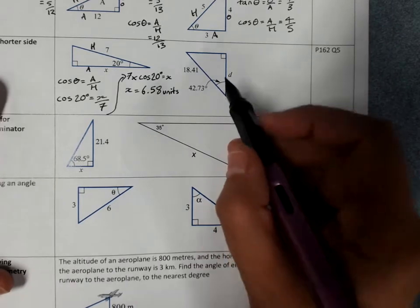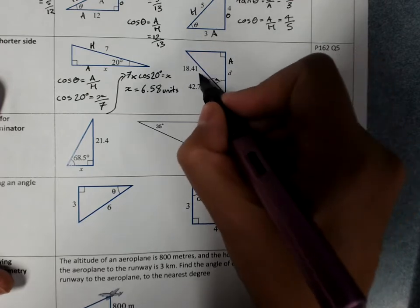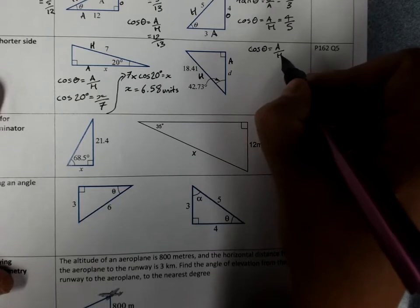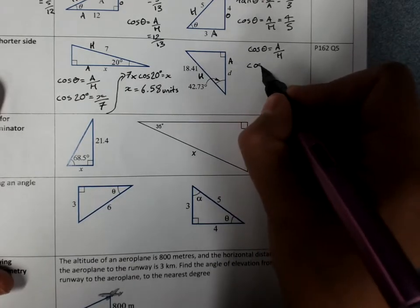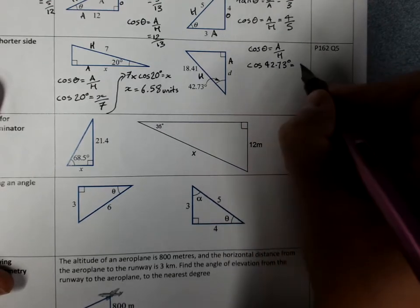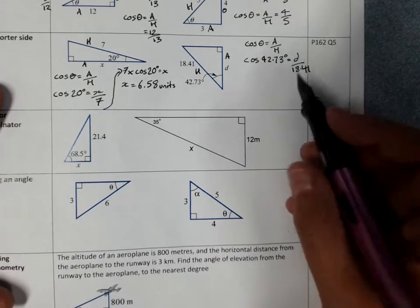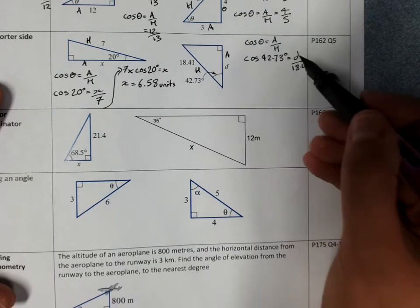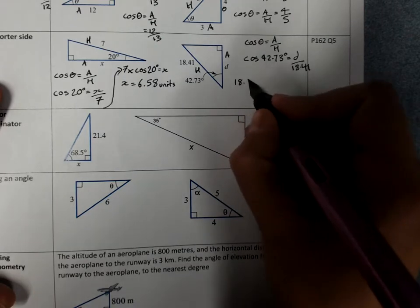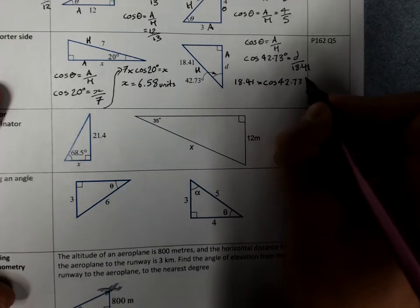This one here. Label the sides. I've got adjacent and hypotenuse again. So that'll be cos again. Write the ratio. Substitute the values. It looks harder because we've got decimals, but really it's just the same thing. Rearrange to get the unknown on its own. I've got d divided by 18.41. That will be 18.41 times cos 42.73 degrees equals d.